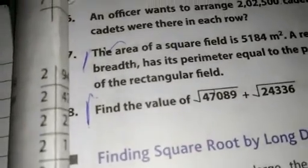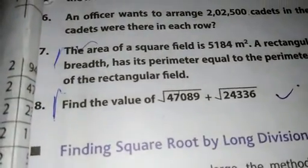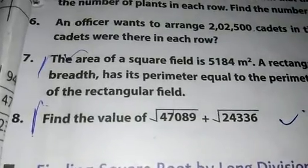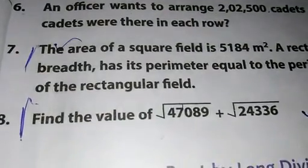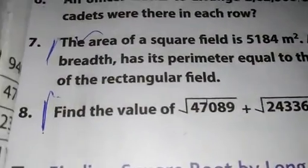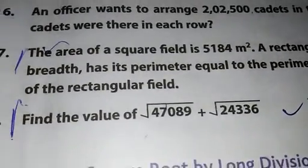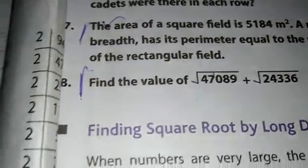And finally you can solve question number 8. Find the value of square root of 47089 plus square root of 24336. Simply you can find a square root.